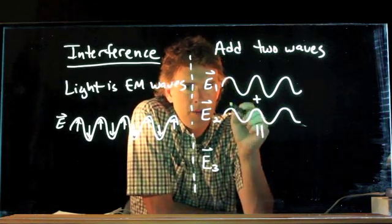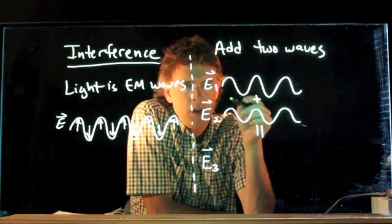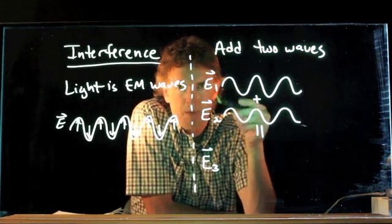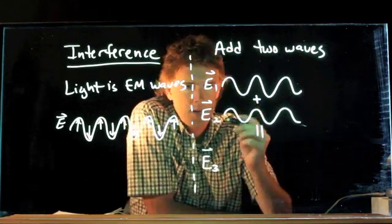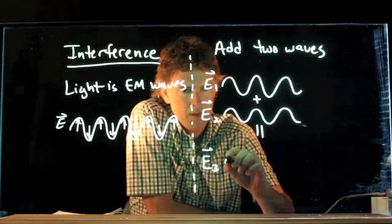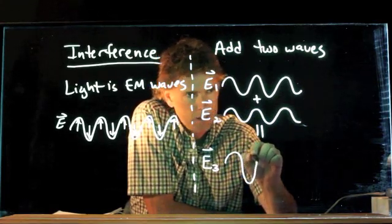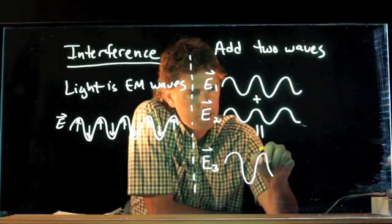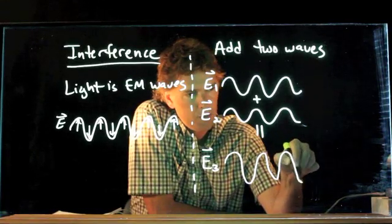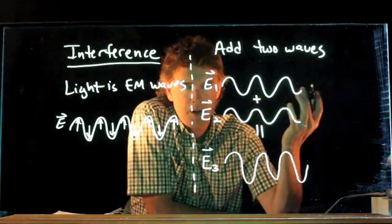And then they're pointing down together and so it gives me a strong electric field pointing down and so forth. And so I get the original wave, but it's bigger. E3 is now the sum of E1 plus E2.